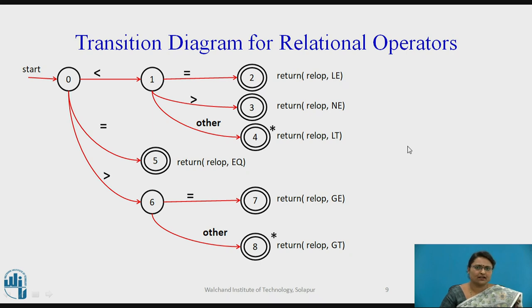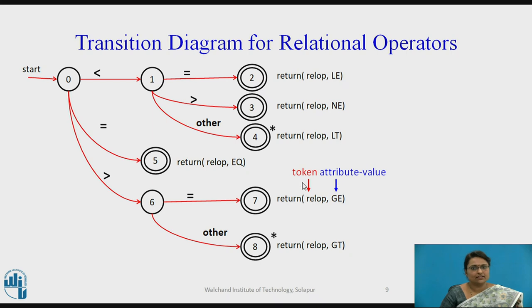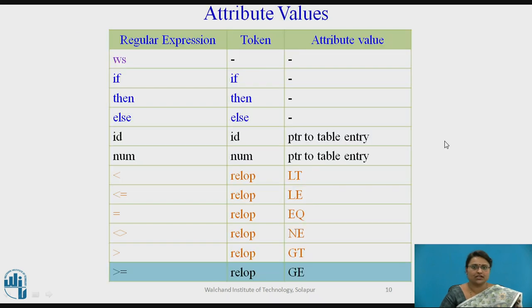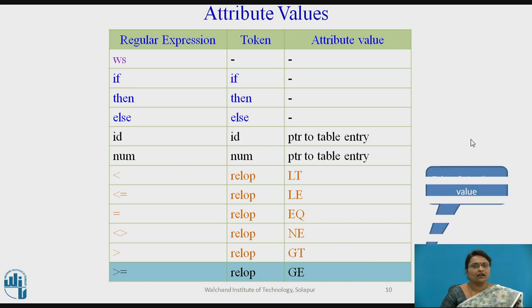Similarly, the transition diagram for all relational operators shows: from state 0, if reading less than equal to it comes to state 2, returning the token relop and attribute GE. For reading equal to it comes to state 5, returning token relop with attribute equal to. Each accepting state returns both the token and the attribute value.